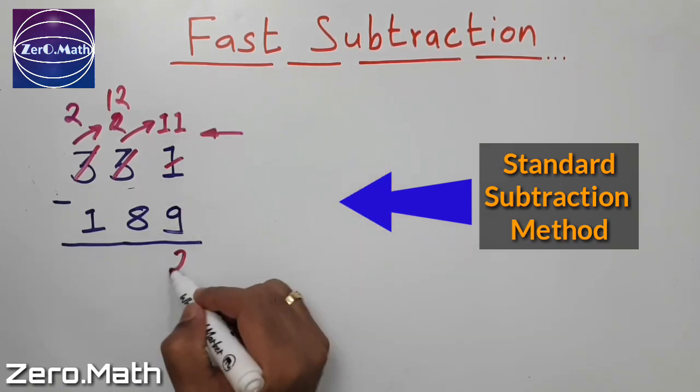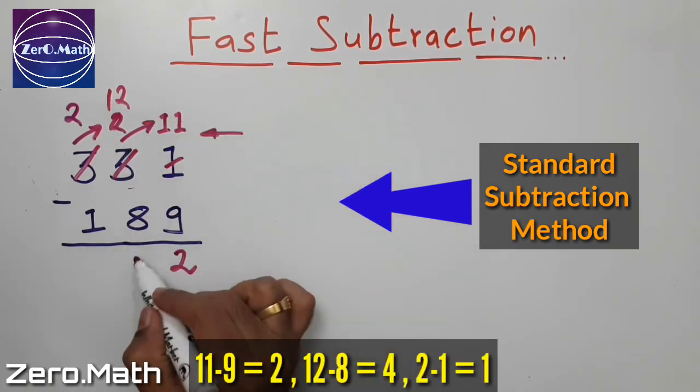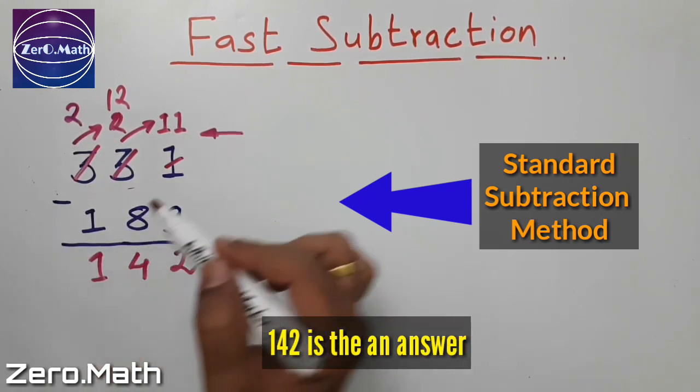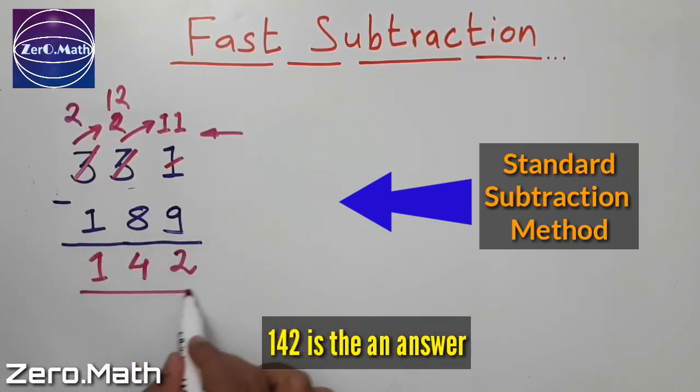So 11 minus 9 is 2, 12 minus 8 is 4, and 2 minus 1 is 1. So 142 is our answer.